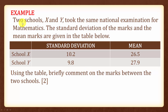In this example, we have two schools, X and Y, which took the same national mathematics examination. The standard deviation and mean marks are given in the table: school X has a standard deviation of 10.2 marks and a mean of 26.5 marks, while school Y has a standard deviation of 9.8 marks and a mean of 27.9 marks. We are asked to compare the marks between the two schools.